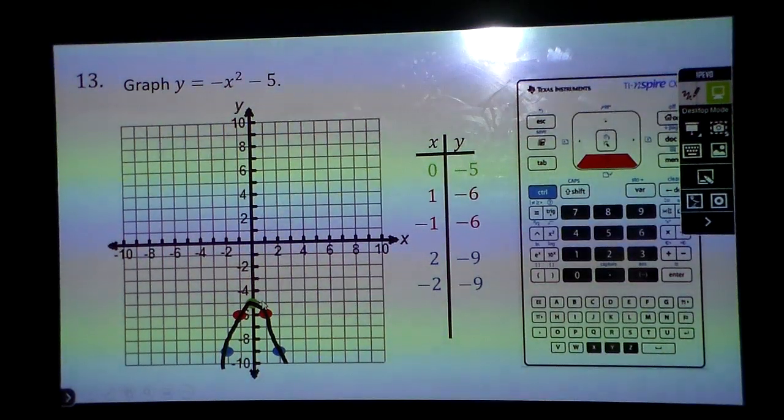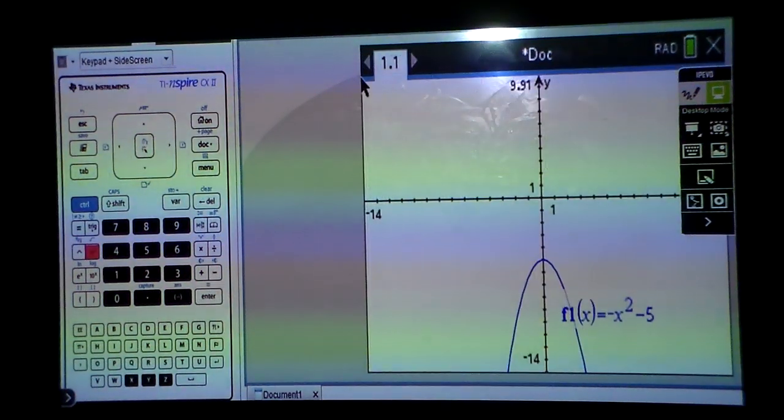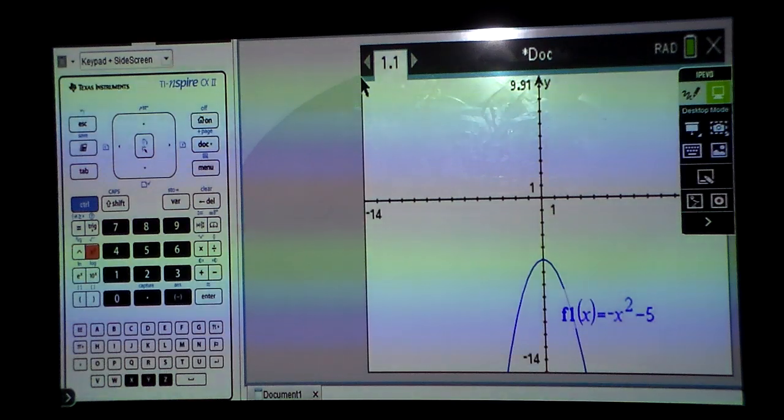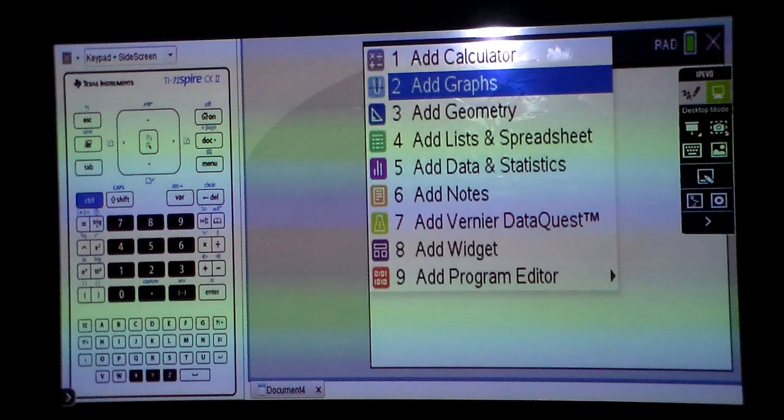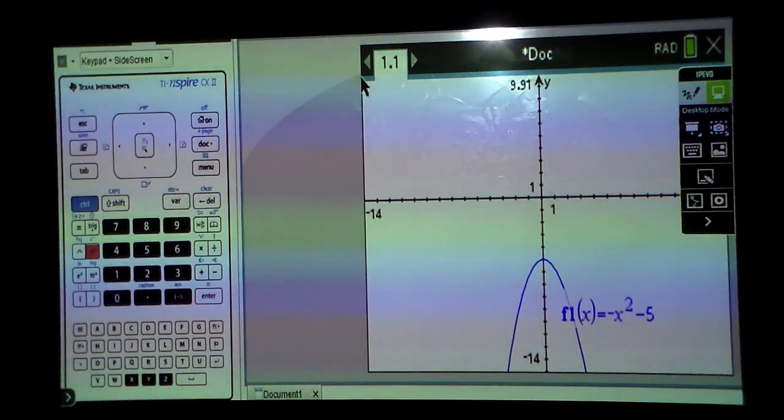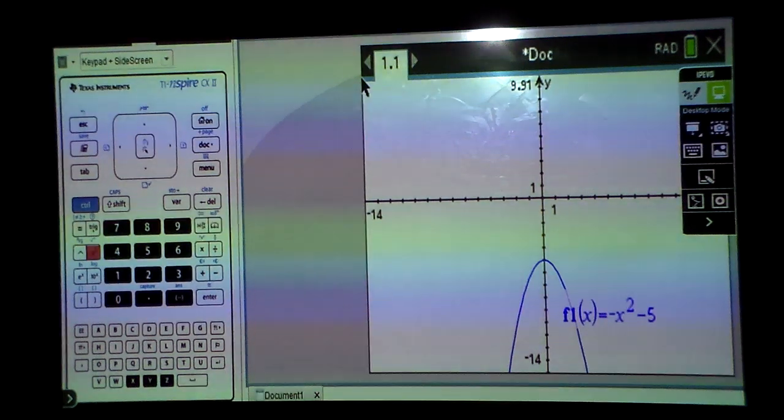Or probably the easiest thing to do is just to go to your calculator, go to your add graphs feature, and type it in. You just use the f of x button for it. There you go, negative x squared minus 5, and it will graph it for you, and you can copy it down.